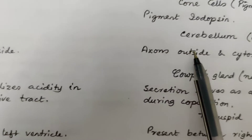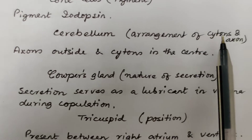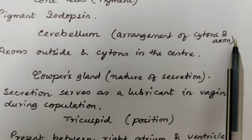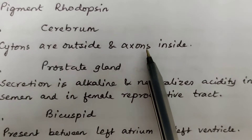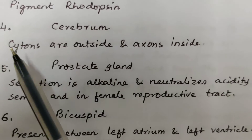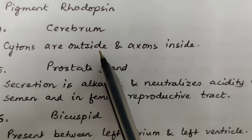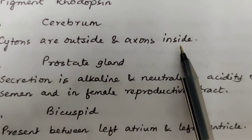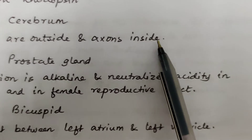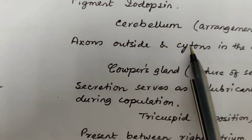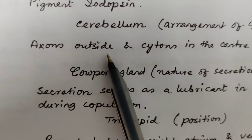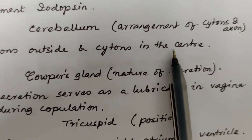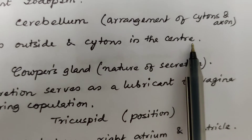Cerebrum and cerebellum based on their arrangement of cytons and axons: in the cerebrum, cytons are outside at the peripheral side and axons are inside in the center. In the cerebellum, the axons are outside at the periphery and the cytons are in the middle center.